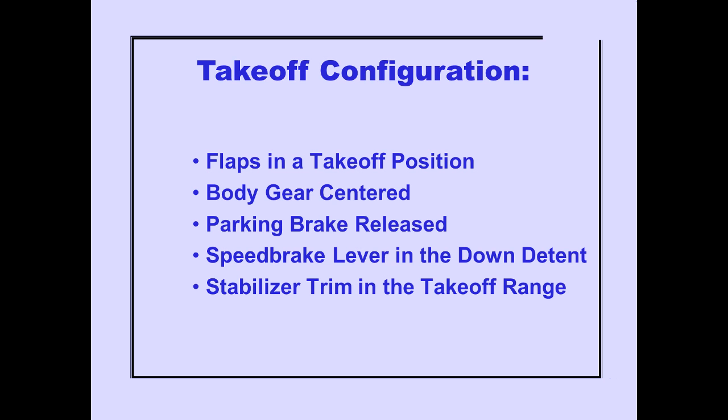The takeoff configuration warnings alert the crew that the airplane is not properly configured for takeoff. The correct takeoff configuration consists of flaps in a takeoff position, body gear centered, parking brakes released, speed brake lever in the down detent, and stabilizer trim in the takeoff range.